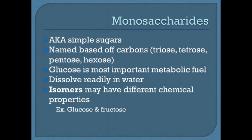Monosaccharides are the monomers of carbohydrates. Mono means one, saccharide means sugar — simple sugars. They're named based on the number of carbons: triose is 3, tetrose is 4, pentose is 5, hexose is 6. Most important monosaccharides are hexose sugars like glucose, galactose, and fructose. Glucose is the most important metabolic fuel. Monosaccharides dissolve readily in water, and some hexoses may be isomers — same chemical makeup but different structures.